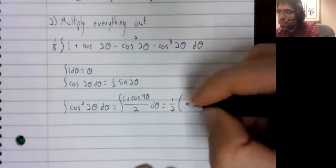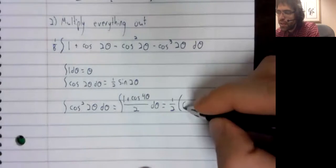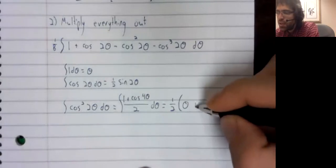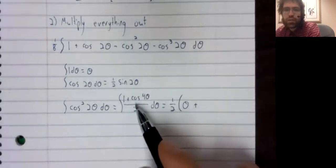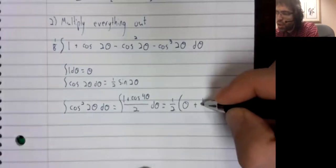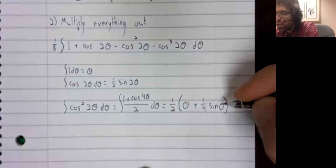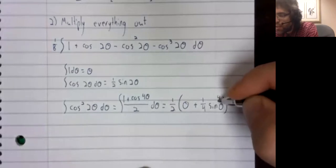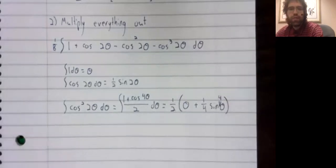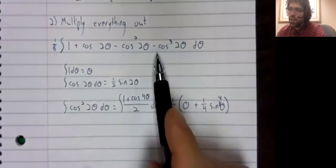Pull that two out. The antiderivative of one is theta. The antiderivative of the cosine of four theta is one fourth the sine of four theta.